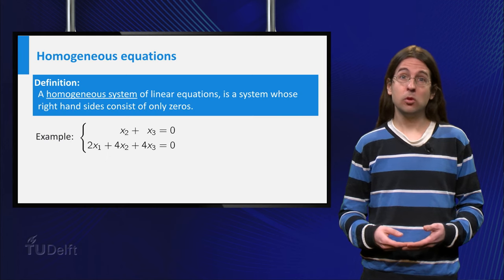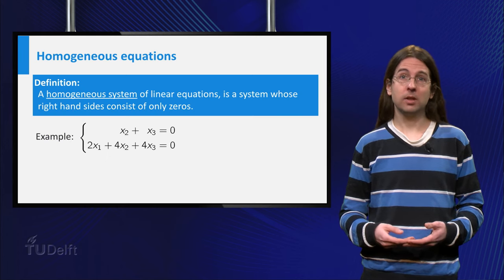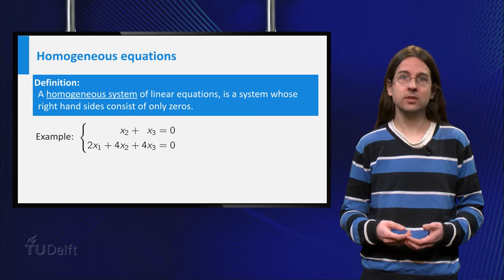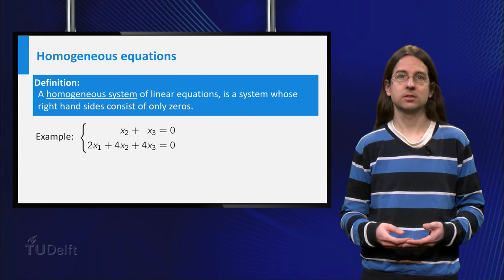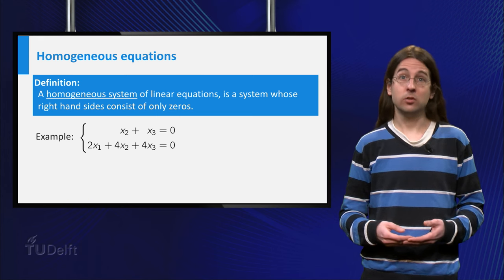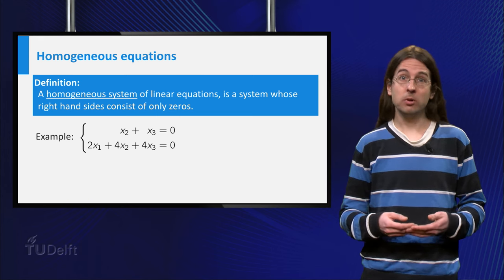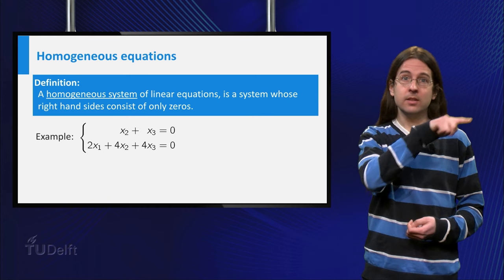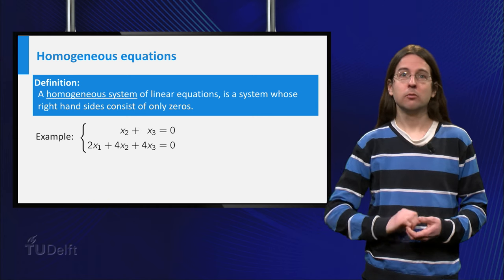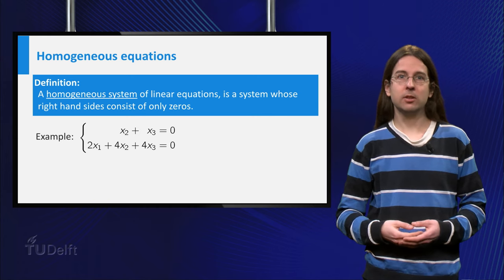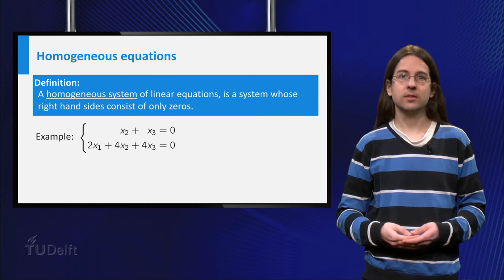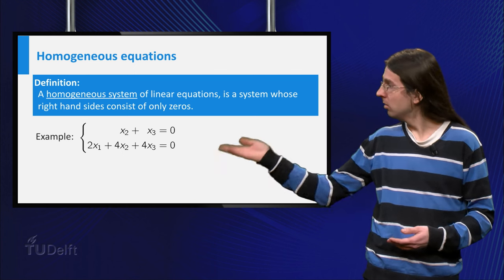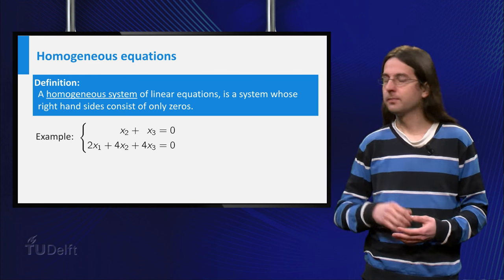For a simple example we start by looking at a set of homogeneous equations. Those are equations in which the right hand side is 0 for all linear equations in a system. You can see an example on the slide.